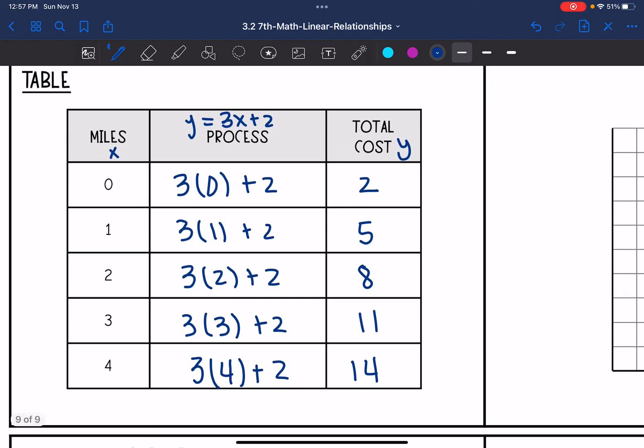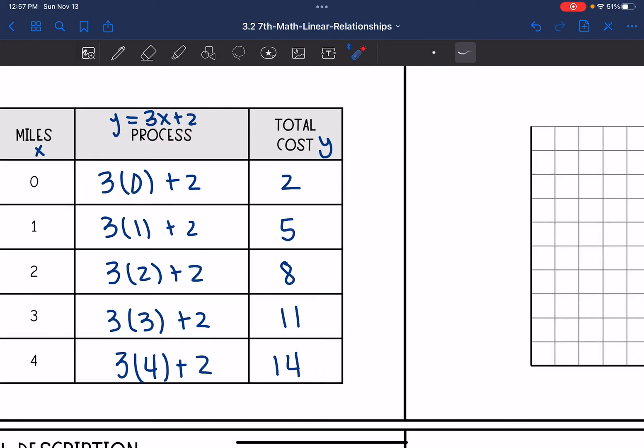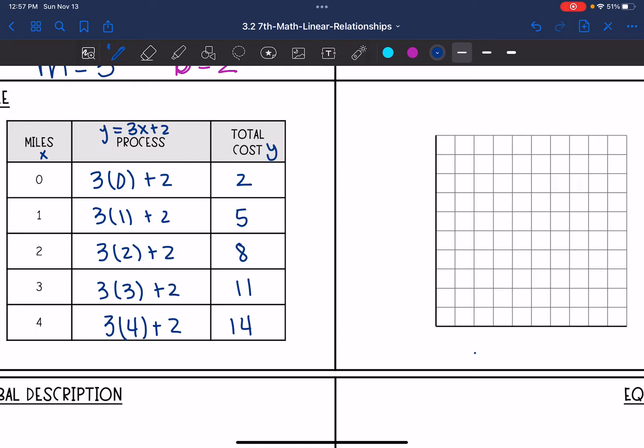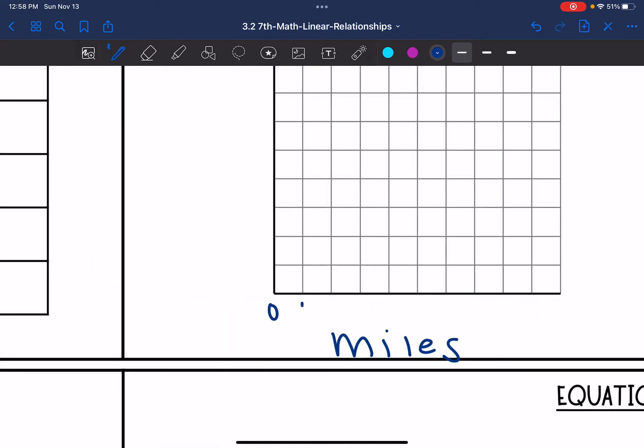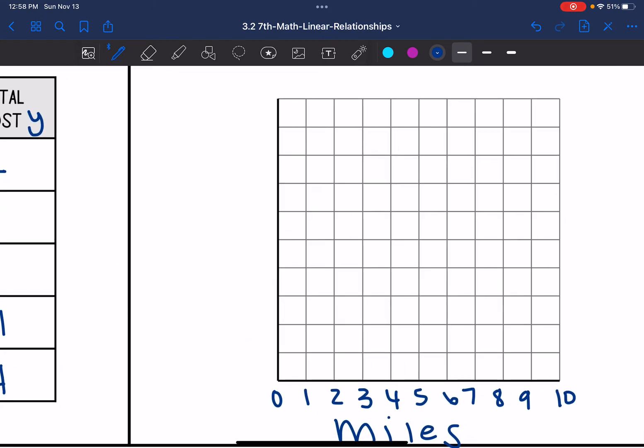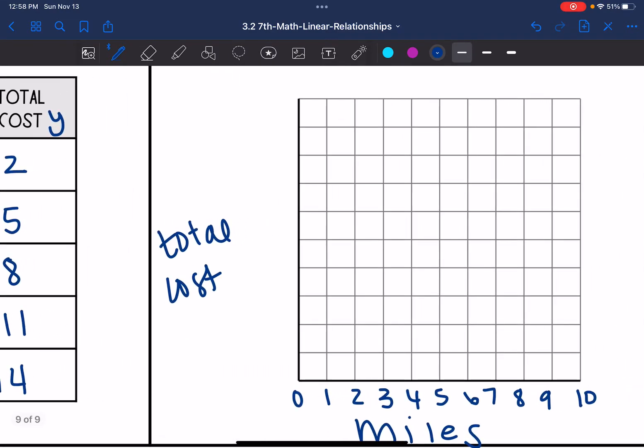So there is our table that is increasing by 3 for the $3 per mile, and it starts at 2 for that $2 fee. So now I can graph this since I have some ordered pairs. X is going to be the number of miles, and I just have to fit from 0 to 4 in the miles. So I can just count by 1s on the x-axis. And then the y-axis is the total cost. And I have to fit from 2 to 14 on there, so I'm going to count by 2s.